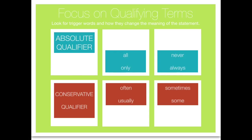To help you choose an answer, focus on qualifying terms. Look for trigger words and how they change the meaning of the statement. Absolute qualifiers include words like all, only, never, and always. Typically, the right answer will not be absolute. Conservative qualifiers like often, usually, sometimes, and some are the better choices for multiple choice questions.